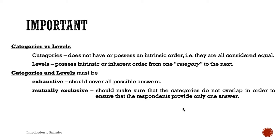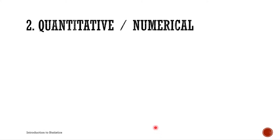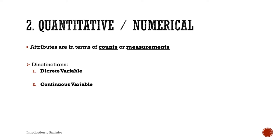The second main type is quantitative variables — also called numerical variables. These attributes are in terms of counts or measures. The variable has numeric properties by which it can be measured, manipulated, and/or controlled. Quantitative variables have two subtypes: discrete and continuous.